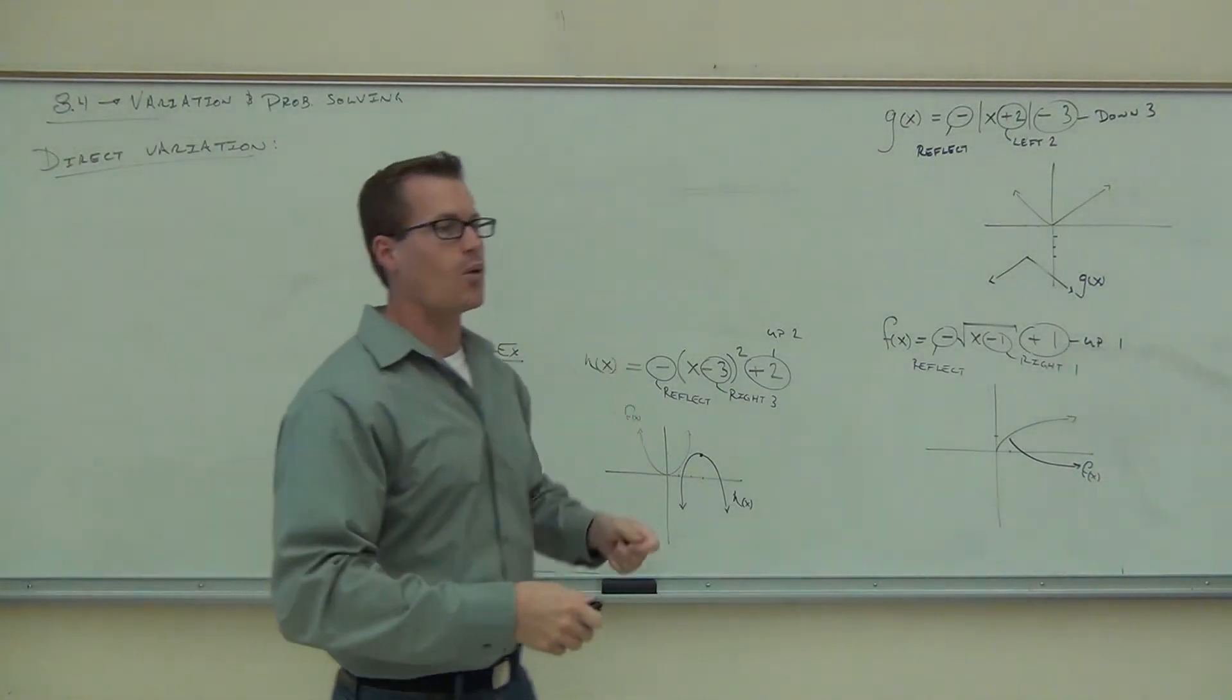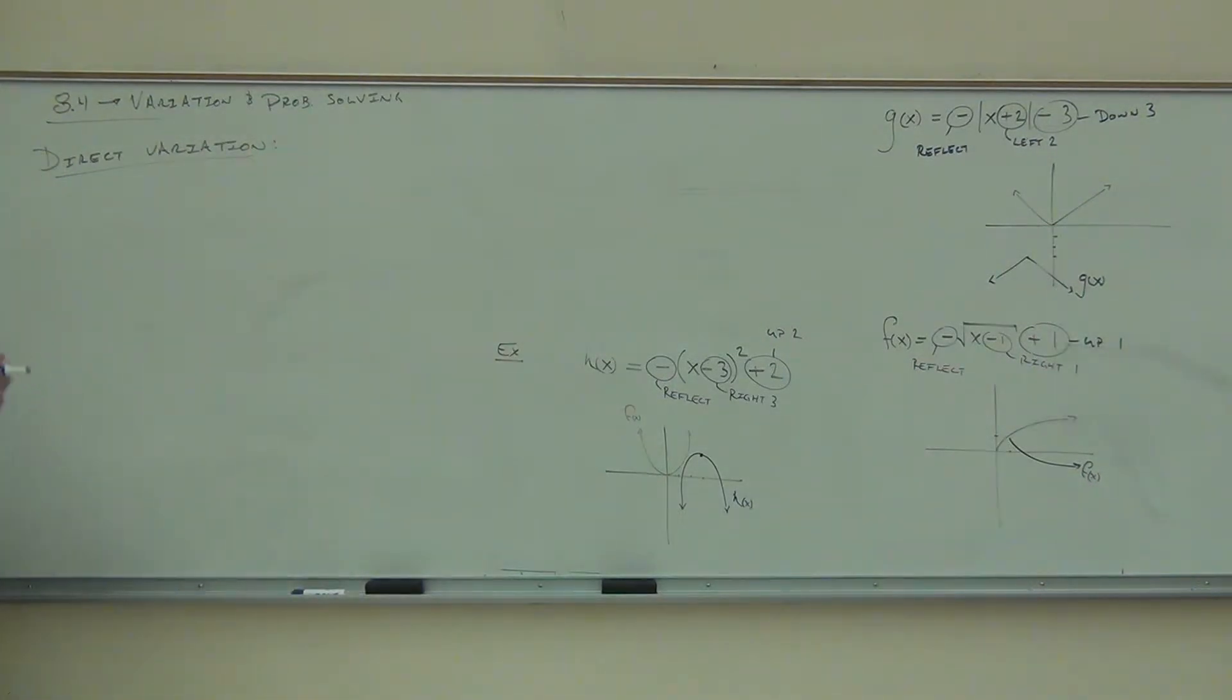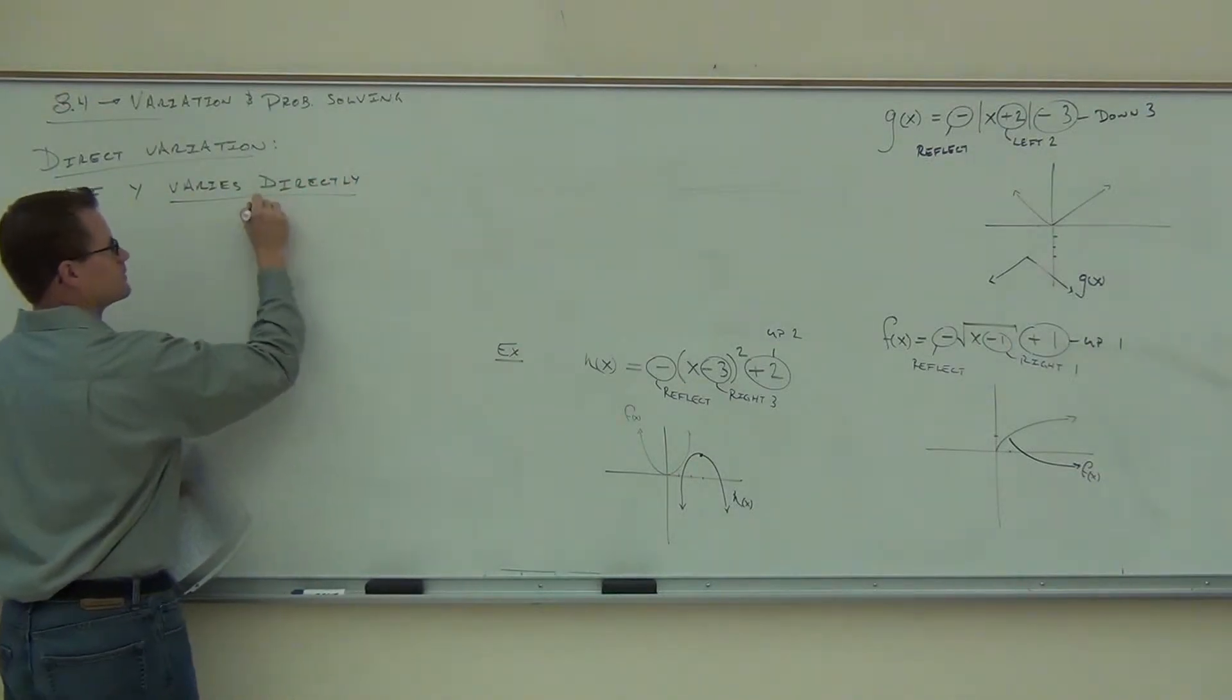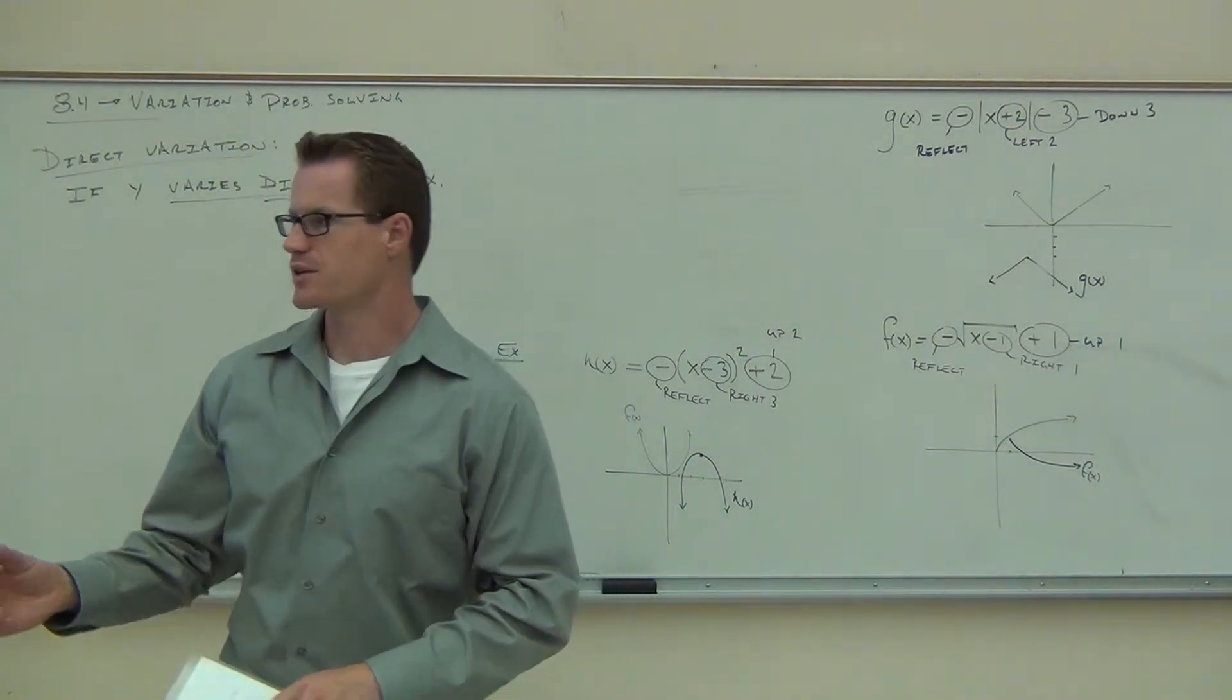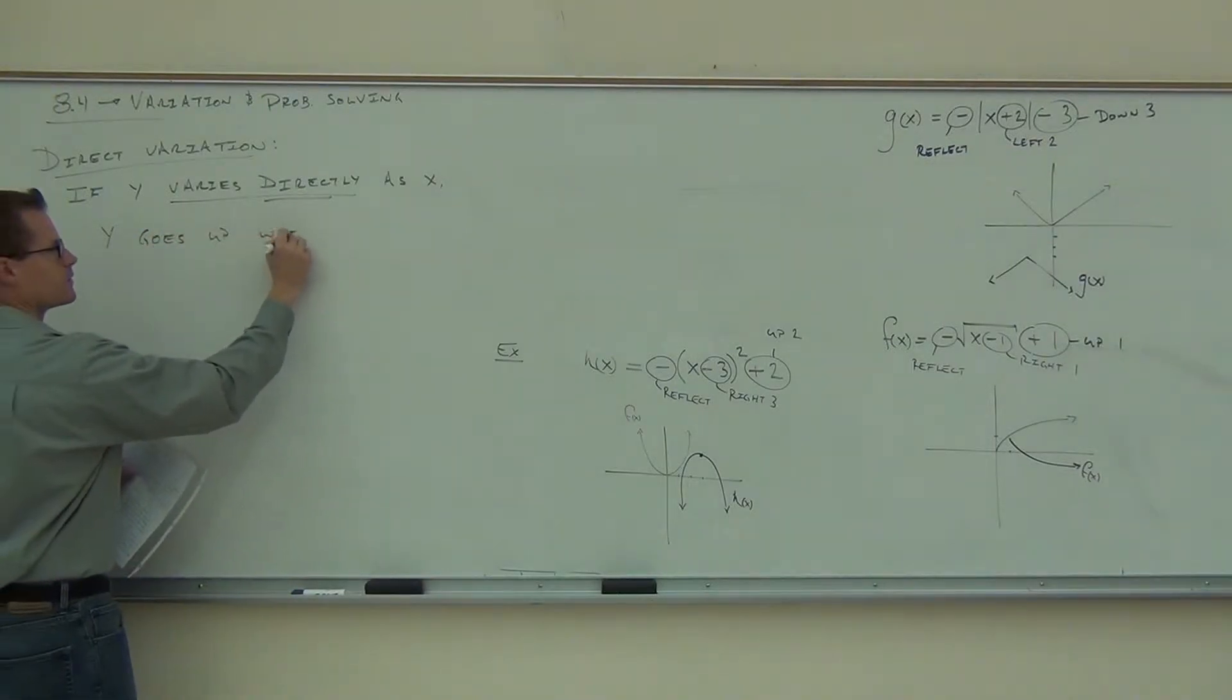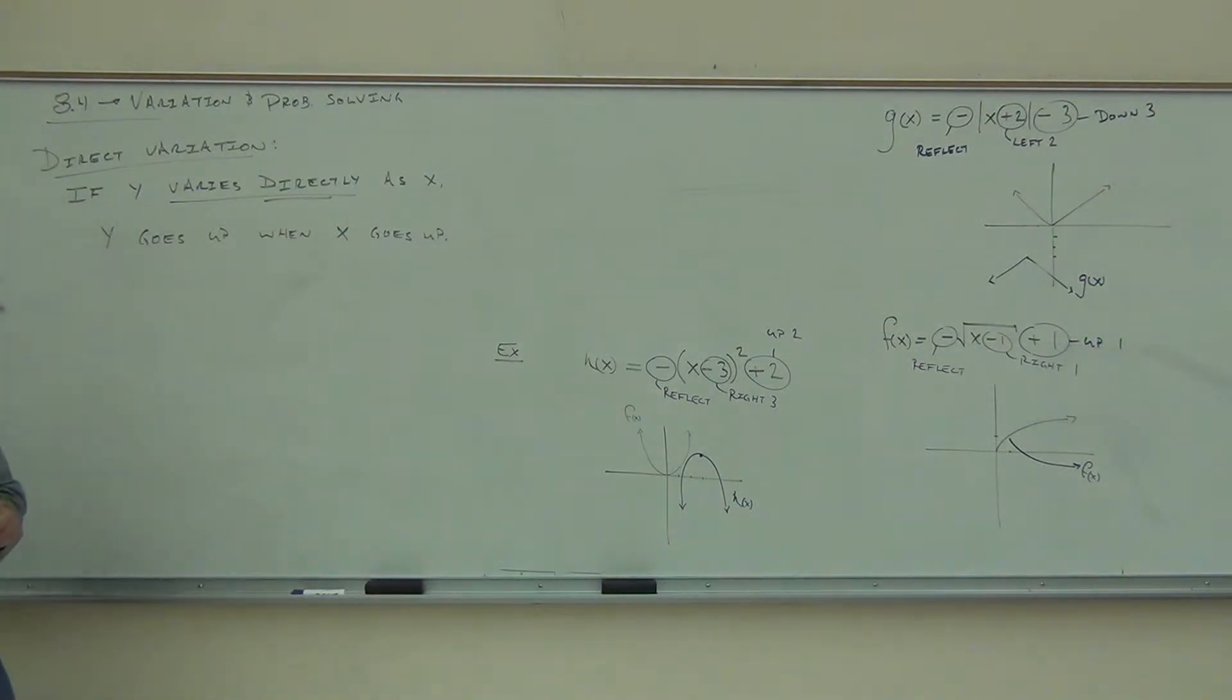It means as one thing goes up, another thing goes up. Or in terms of X and Y, as X increases, Y also increases. So if Y varies directly, it's another way we can say direct variation. If Y varies directly as X, the key word there is directly. If Y varies directly as X, right there that's tied X and Y together in a very specific relationship. It says, as X goes up, Y also goes up. Y goes up when X goes up. Or Y goes down when X goes down. They're tied together.